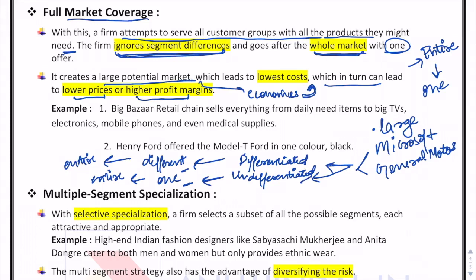Such firms can cater to the entire market in two broad ways: differentiated or undifferentiated. Under differentiated marketing, the firm sells different products to the entire market; under undifferentiated (mass marketing), the firm provides one product to the entire market. A classic example of undifferentiated marketing is Henry Ford, who famously said any customer can have a car painted any color as long as it is black. Differentiated marketing usually results in more sales but also higher costs.